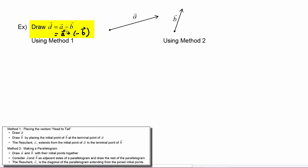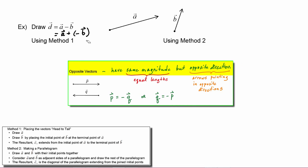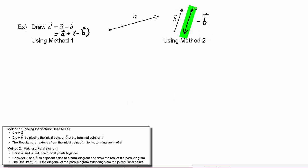To add vector A plus the opposite of vector B, we first need a picture of the opposite of vector B. Remember: opposite vectors have the same magnitude but opposite direction. So if this is vector B, then the opposite of vector B has the same length but goes in the opposite direction. Now we can use our two methods to add those two vectors together.